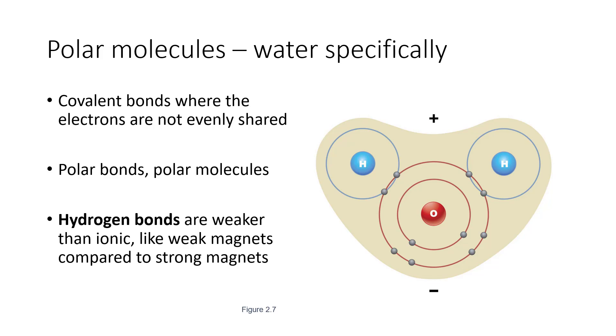This makes for a polar bond, and polar bonds means these are polar molecules. Certain elements like oxygen, chlorine, and nitrogen tend to form polar bonds. Other atoms like carbon and hydrogen will less often form polar bonds. So when looking at a molecule and asking if it's polar, look for oxygens, nitrogens, and chlorines.